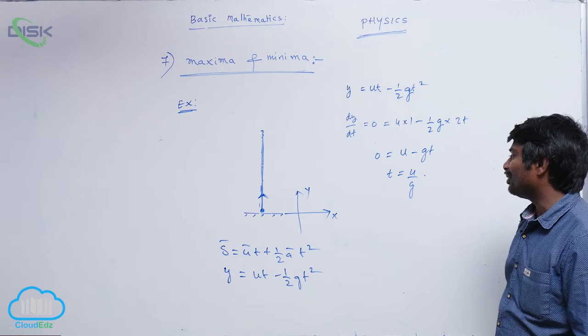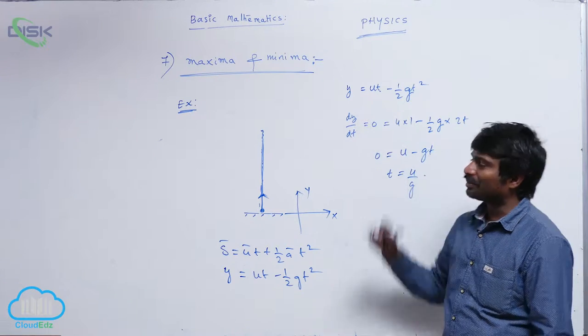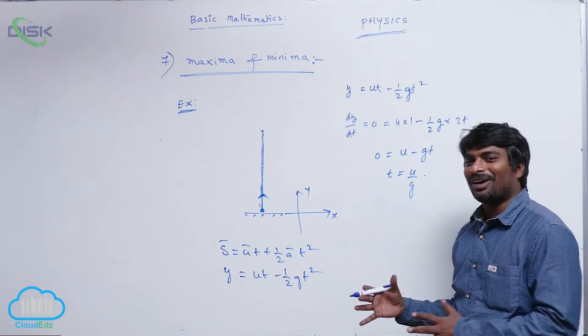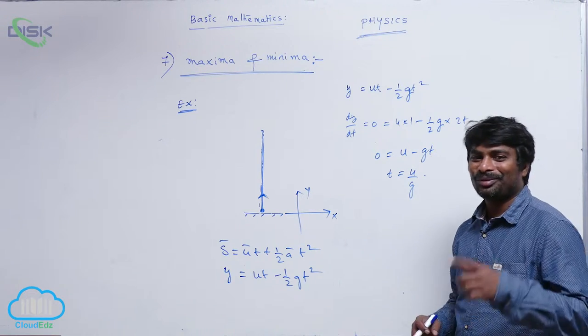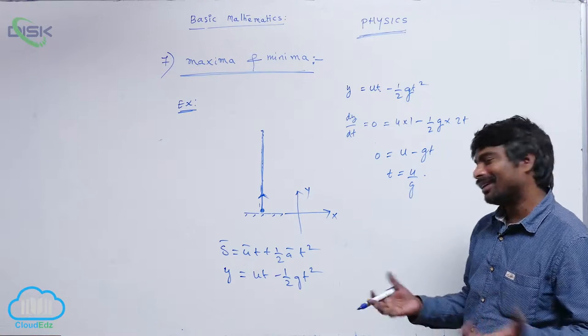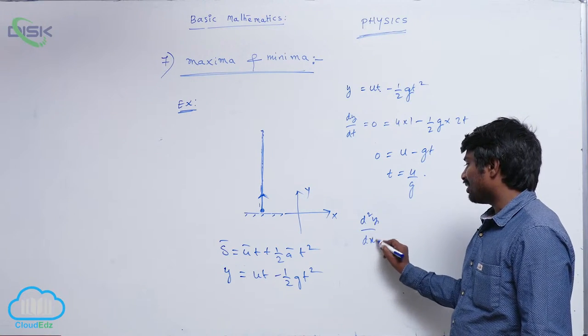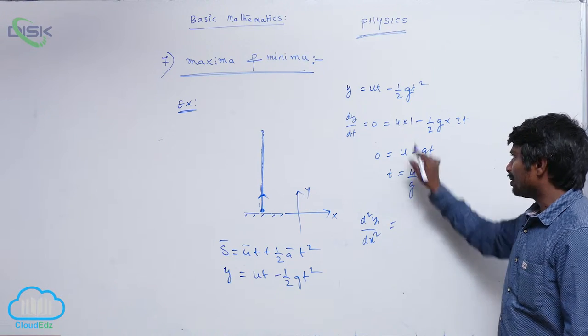After time t equals u by g, it attains maximum value. Now whether it actually attains maxima or minima, if you are in doubt, you can verify. So d²y/dt², double differentiation of this function—u differentiation